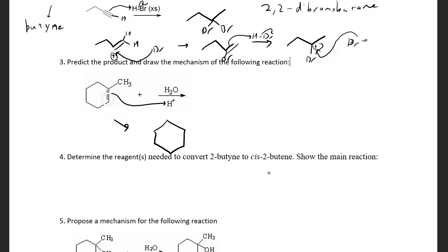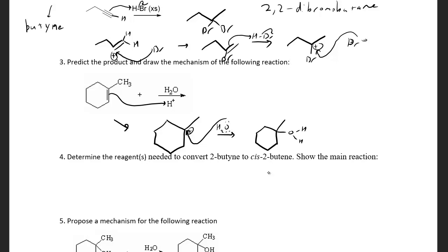One option puts the plus charge here, the other puts it here. Tertiary is more stable than secondary, so I'll definitely put the plus charge on the tertiary carbon, with the proton on the other carbon. This is our carbocation intermediate. Now water acts as a nucleophile and does a nucleophilic attack on that carbocation intermediate to get us almost to our product — now we have a methyl group there and an OH₂⁺ there.